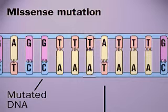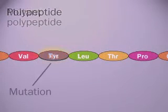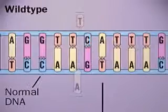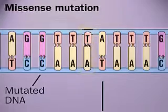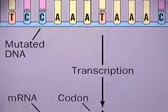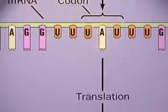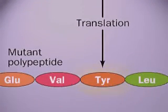A missense mutation is a type of point mutation that results in the appearance of an inappropriate amino acid in the polypeptide product. The wild type DNA suffers a change in one base pair, causing a change in the resulting mRNA codon, which in turn codes for a different amino acid at this point in the forming polypeptide.